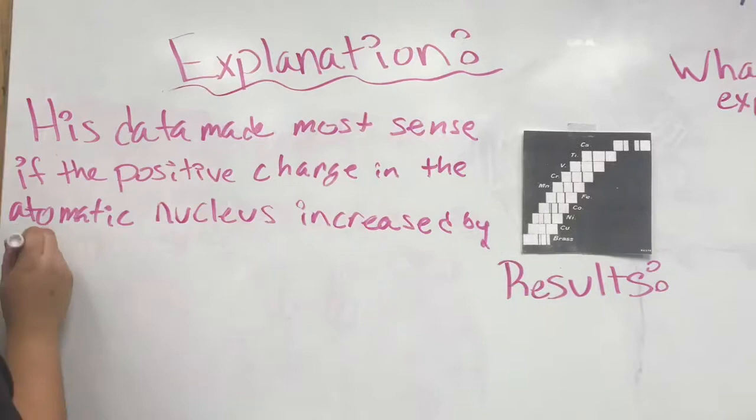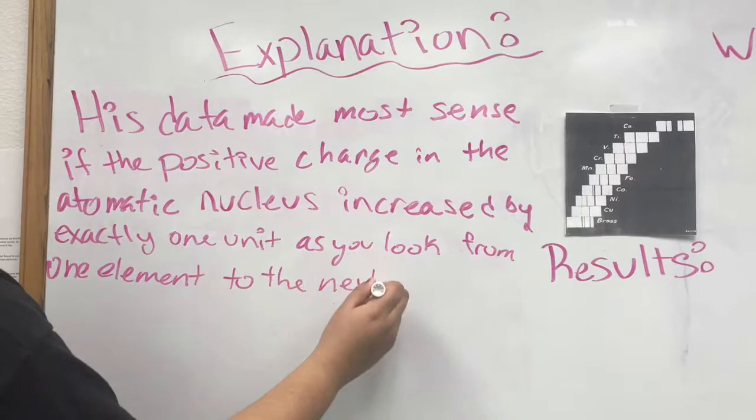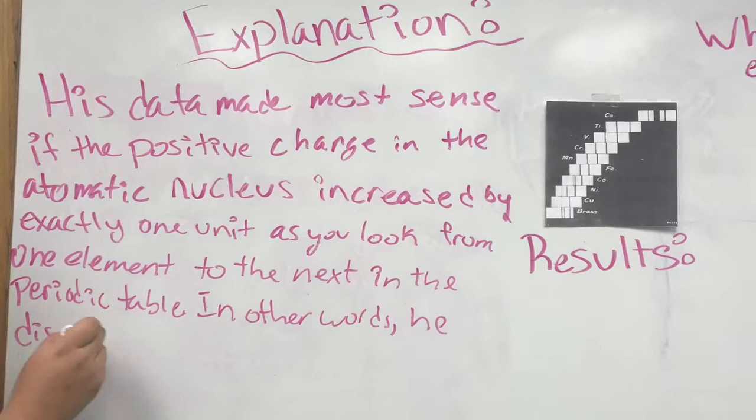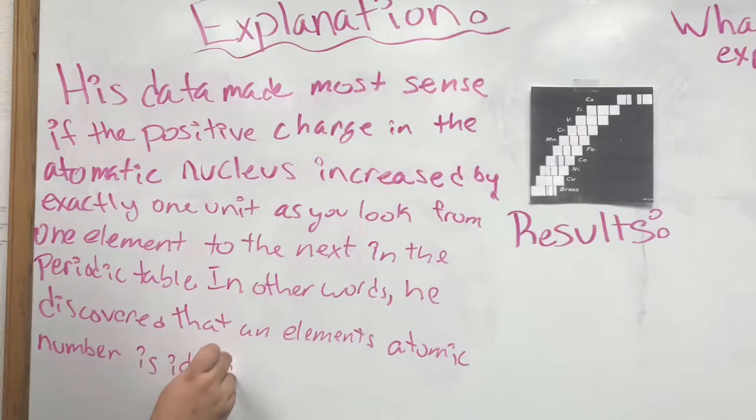His data made most sense if the positive charge in the atomic nucleus increased by exactly one unit as he worked from one element to the next in the periodic table. In other words, he discovered that an element's atomic number is identical to how many protons it has.